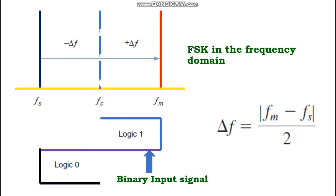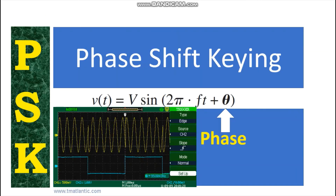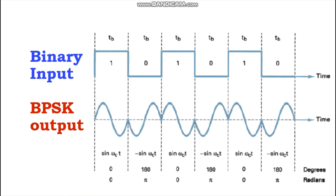If the information signal is digital and the phase θ of the carrier is proportional to the information signal, the result is a digitally modulated signal called phase shift keying (PSK). For a BPSK waveform, a logic 1 input produces an analog output with a 0° phase angle, and a logic 0 input produces an analog output with a 180° phase angle. As the binary input shifts between logic 1 and logic 0, the phase of the BPSK waveform shifts between 0° and 180°.